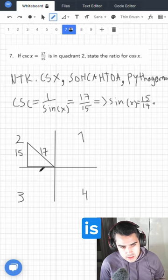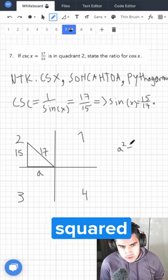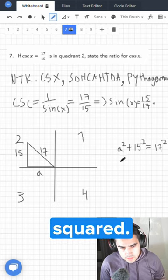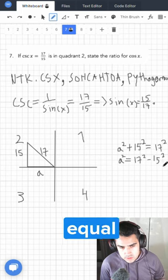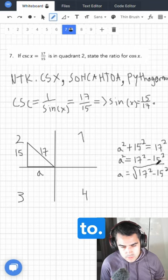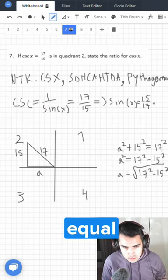Now what is the adjacent? Let's call it A. We know that A squared plus 15 squared is equal to 17 squared. That means A squared is equal to this. So A is equal to the square root of all of this, which is equal to 8.